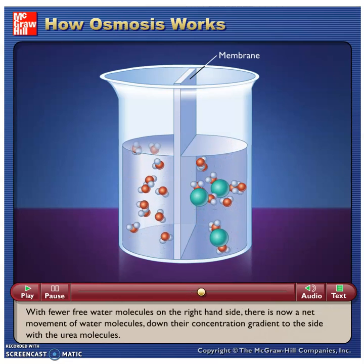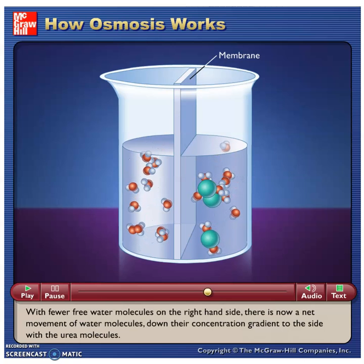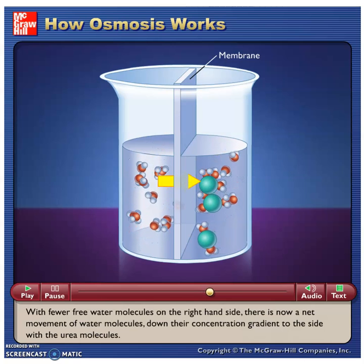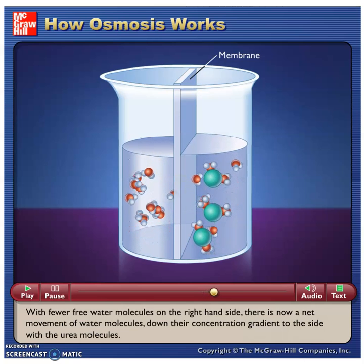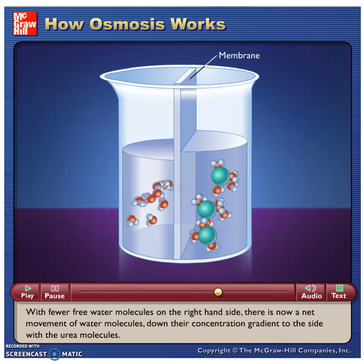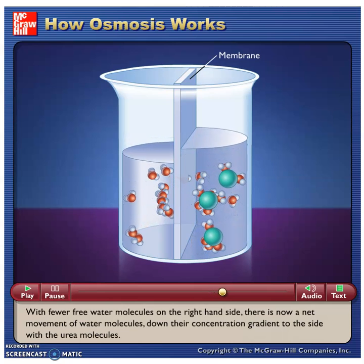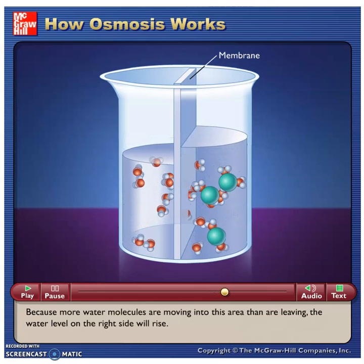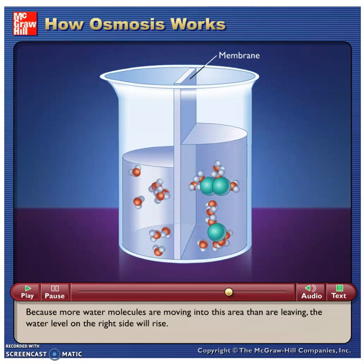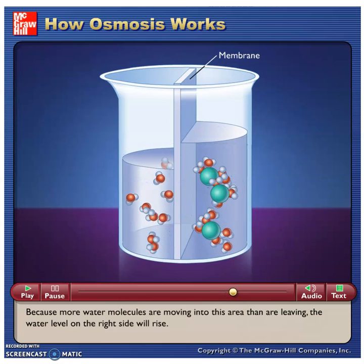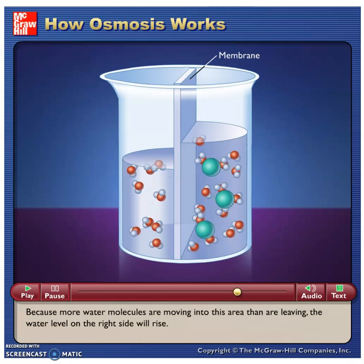With fewer free water molecules on the right-hand side, there is now a net movement of water molecules down their concentration gradient to the side with the urea molecules. Because more water molecules are moving into this area than are leaving, the water level on the right side will rise.